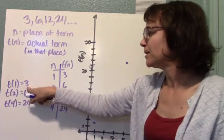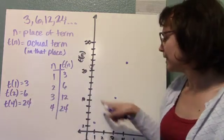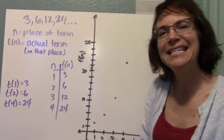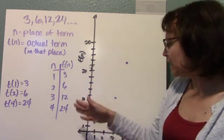That's the point 1, 3 on my graph, where the x-axis is my n, and the y-axis is my t of n. So I can go ahead and plot those.